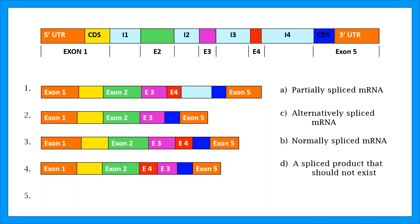The last one, product 5, has no introns, and the exons are in the correct order. The only difference here is the removal of exons 2 and 4, making this another alternatively spliced mRNA.